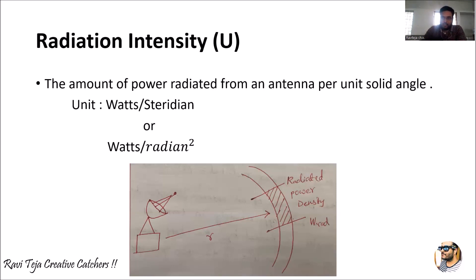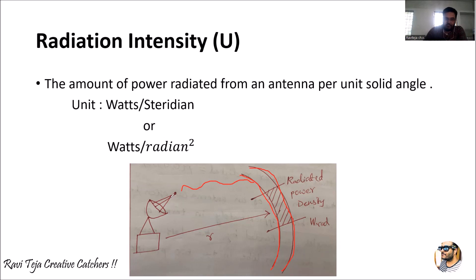If we consider an antenna which is projecting the signal into free space, we take a particular surface area through which the signal is getting propagated. In order to determine the radiation intensity, we need to select a particular area or surface and see how much power is dissipated through that particular surface area. The shaded area is considered as the surface.